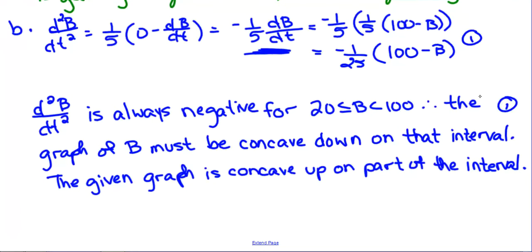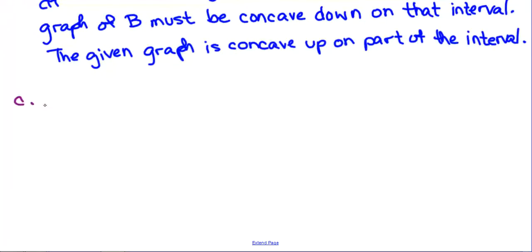All right. Last part, use separation of variables. They even tell you to use separation of variables. That's kind of unusual, but every once in a while they'll throw you a bone like that, to find y equals B of t, the particular solution to the differential equation with initial condition B of 0 equals 20. I mean, they even tell you the initial condition.